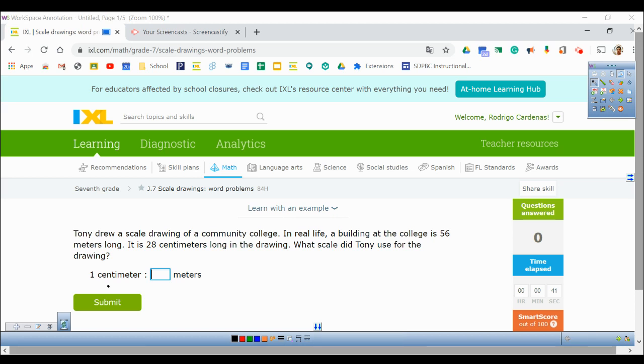Tony drew a scale drawing of a community college. In real life, a building at the college is 56 meters long. It is 28 centimeters long in the drawing. What scale did Tony use for the drawing?